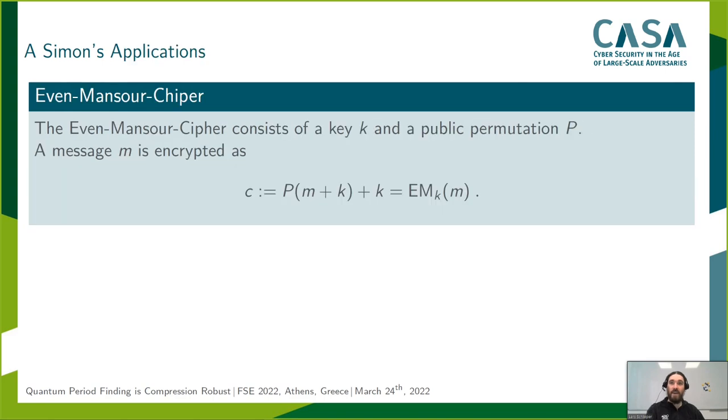An application of Simon's algorithm would be an attack on the famous Even-Mansur cipher. The Even-Mansur cipher is defined over a key and a public permutation, whereby the encryption of m is computed as k ⊕ π(k ⊕ m), and is classically provably secure, in the sense that any attacker requires at least 2^(n/2) queries to the cipher to break it with constant probability.